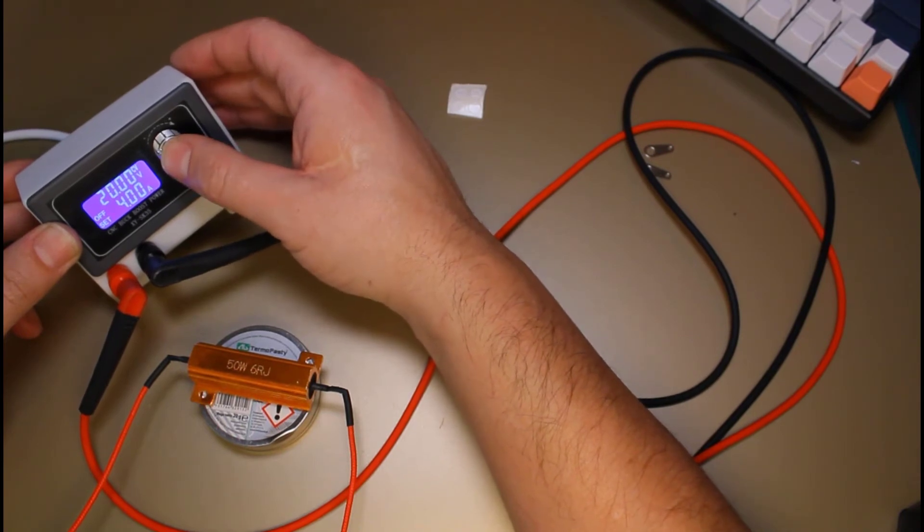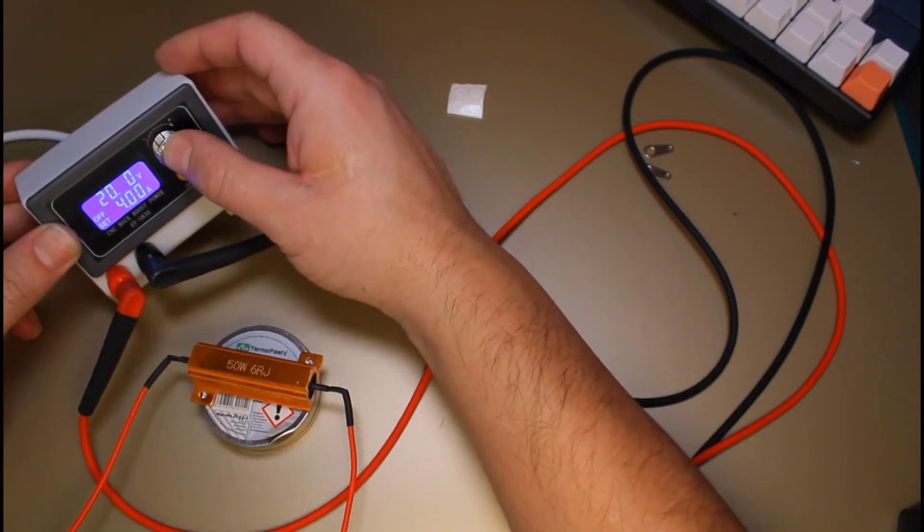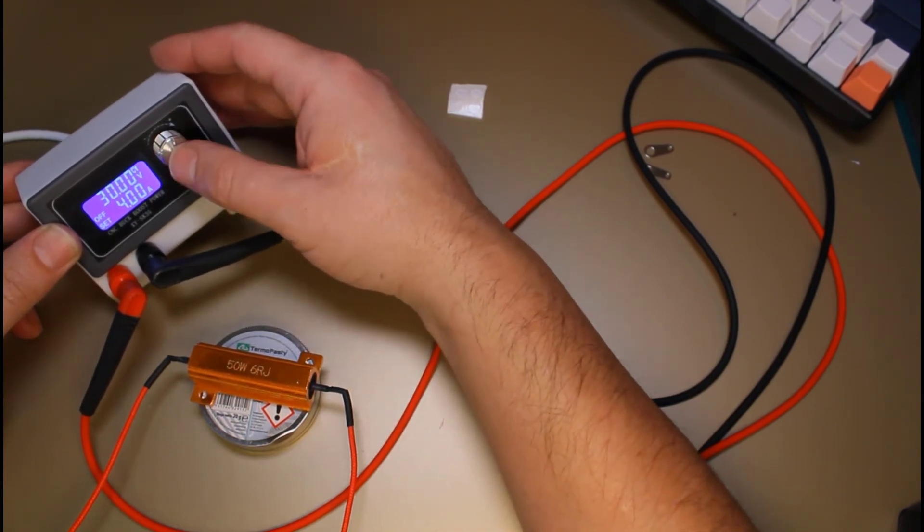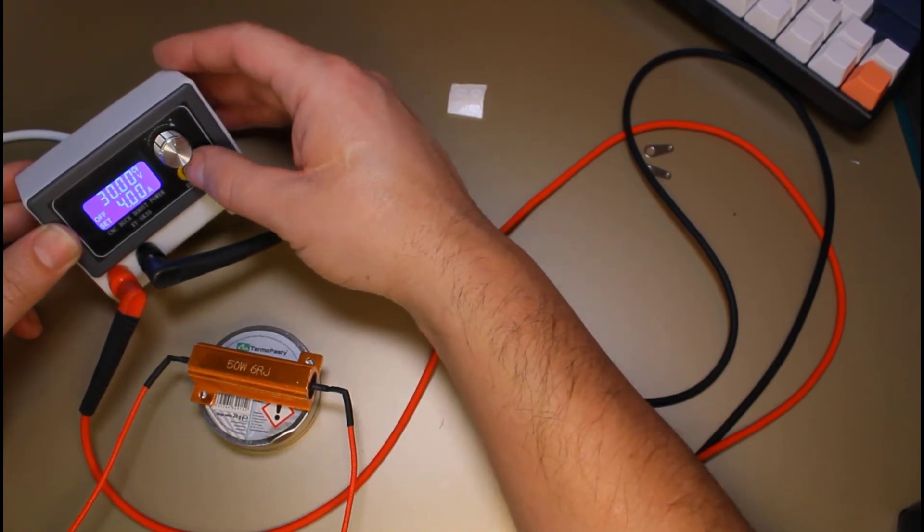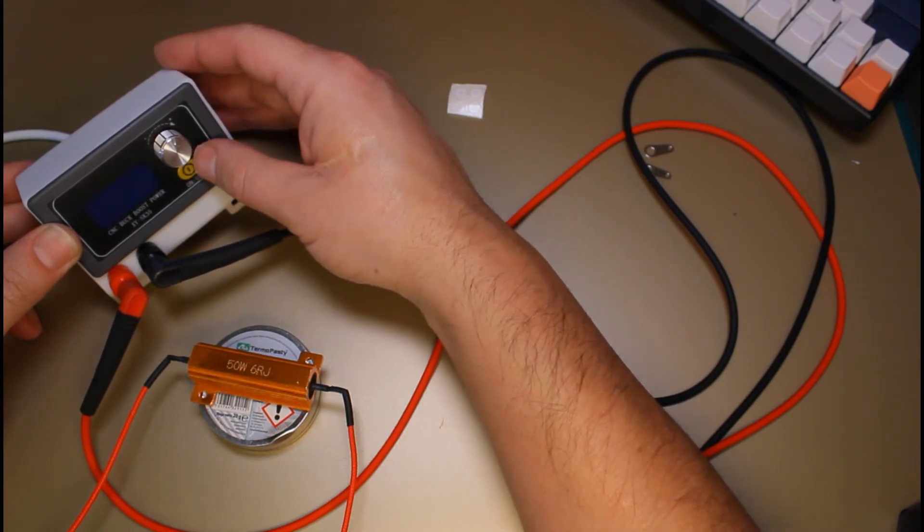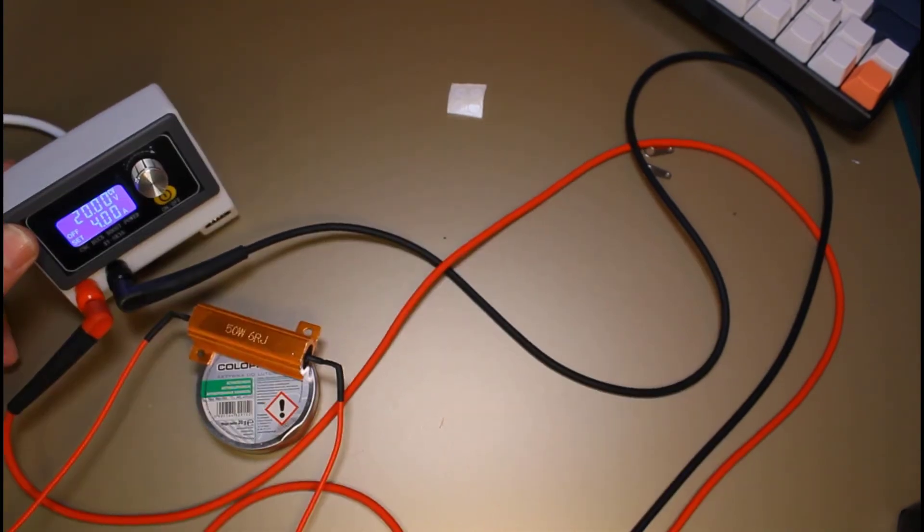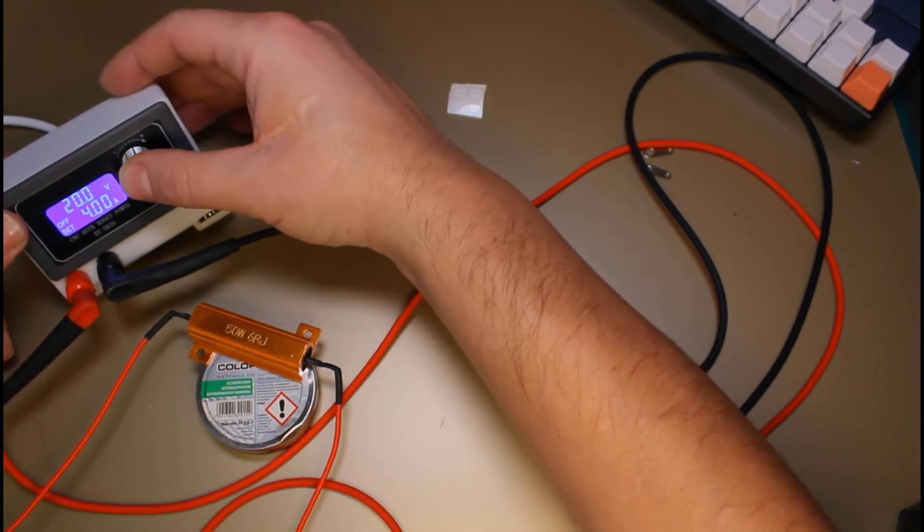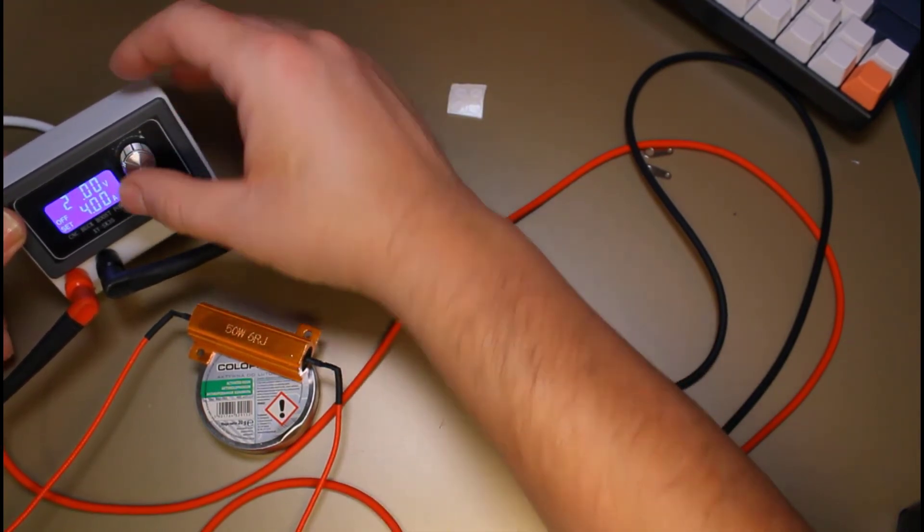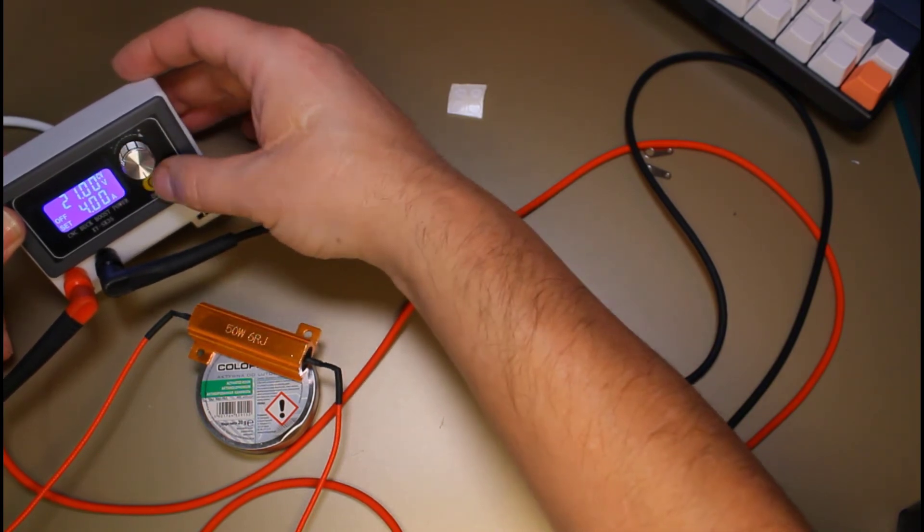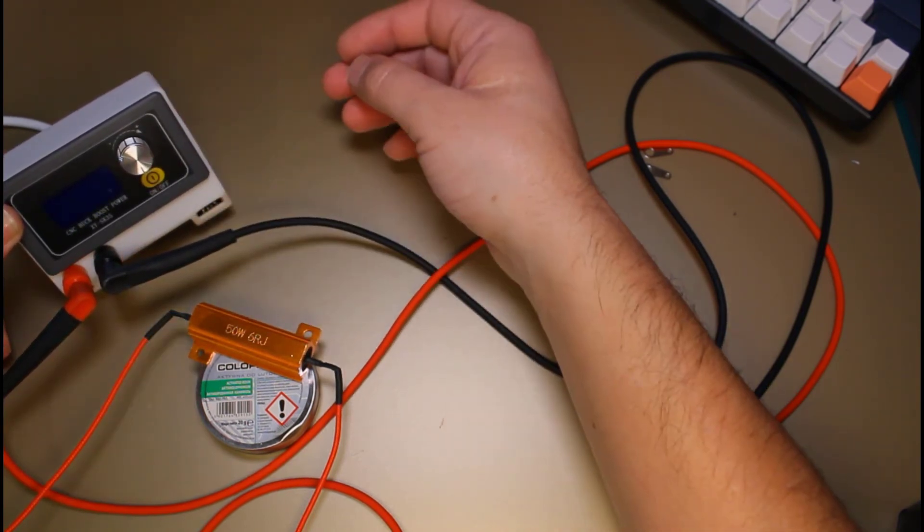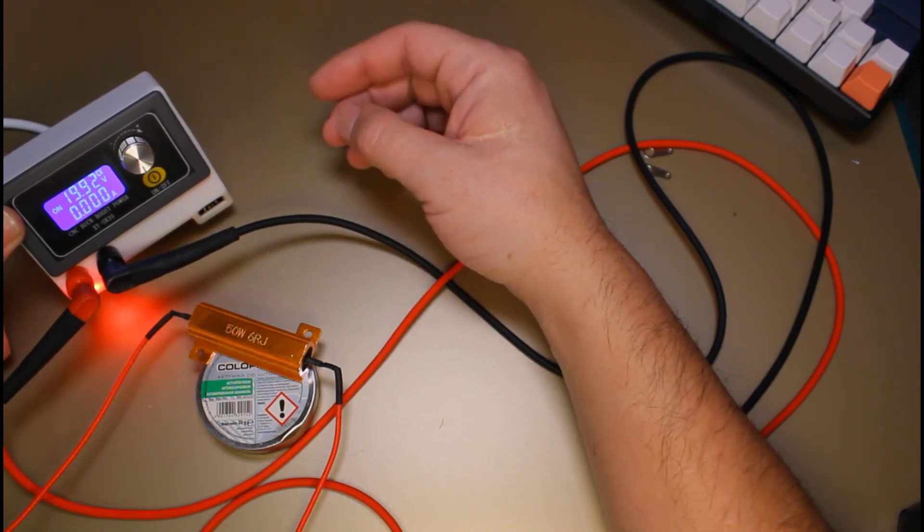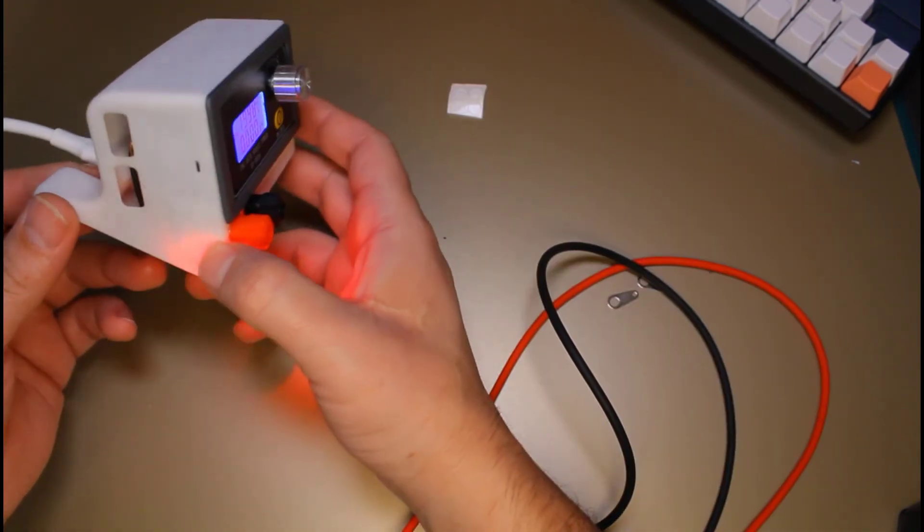One more test. 30 volts, 4 amps over the PD trigger output. Let's see what it's going to do. Oh, shut down. Okay, let's test this on the limits. 21 volts, 4 amps. No, so it doesn't like that. Mini bench power supply.